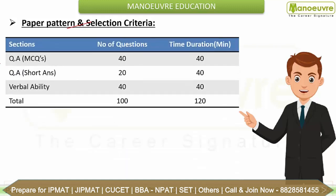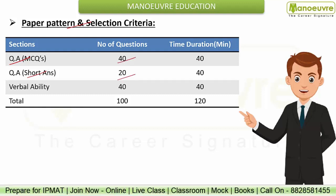So the sections are: Quantitative Aptitude MCQ based and short answer based — 40 questions from MCQs, 20 questions from short answer, with 40 minutes for each section. For Verbal Ability, 40 questions for 40 minutes. Overall, 100 questions for 120 minutes. The marking system is plus 4, minus 1 for MCQs. For short answer it is plus 4 or 0, as there is no negative marking. For Verbal section, it is plus 4, minus 1.